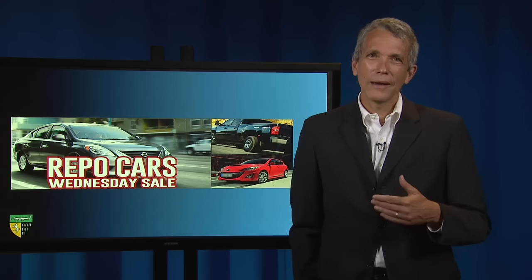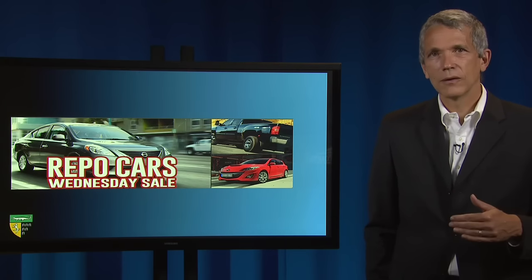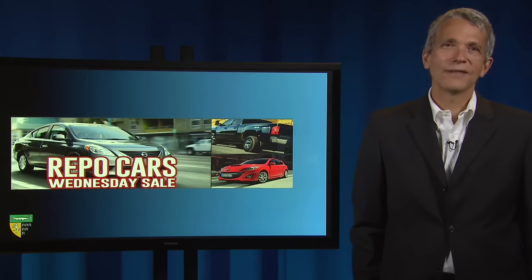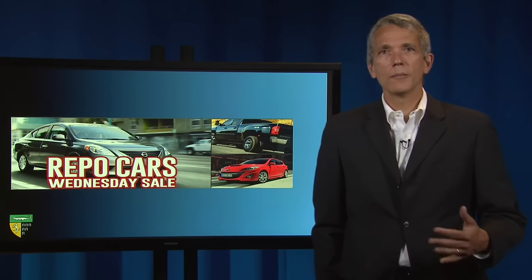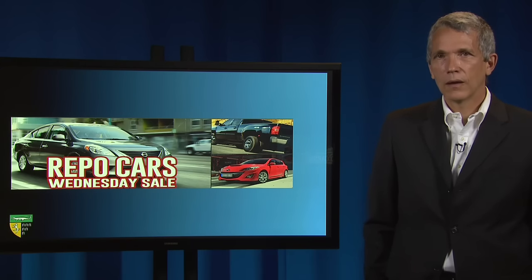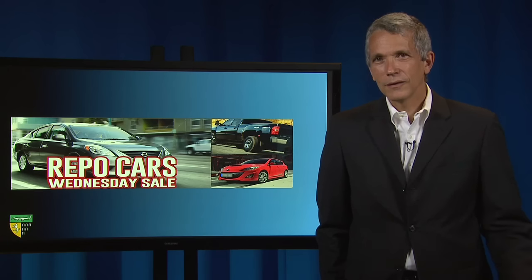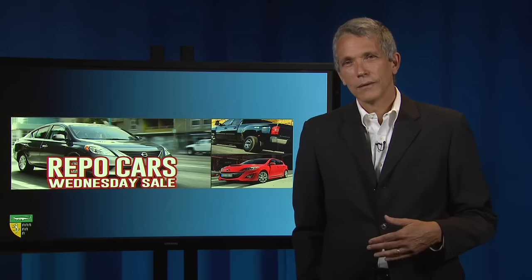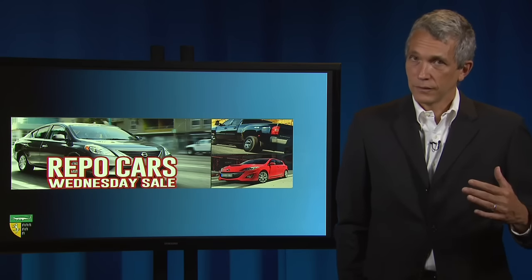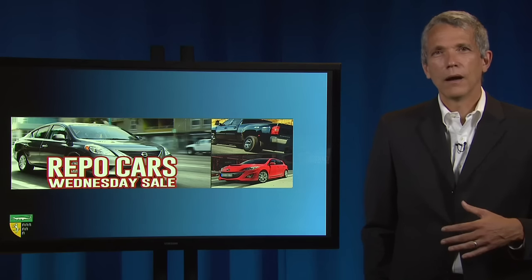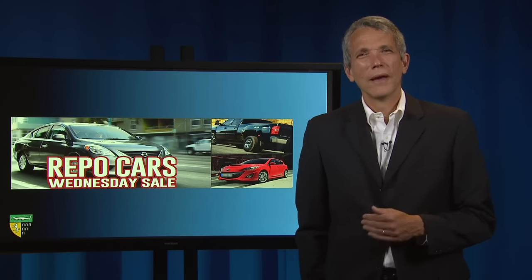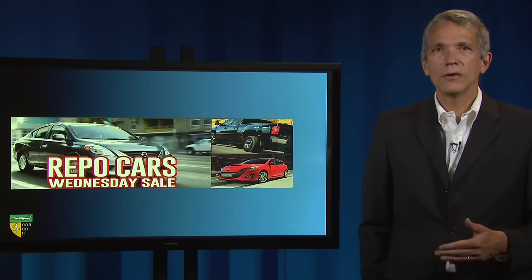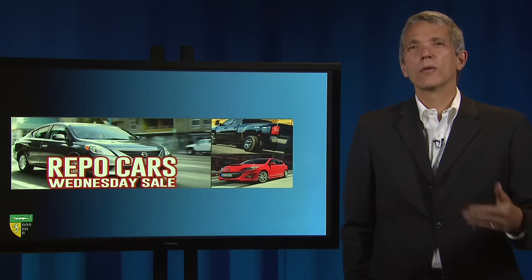Subject to a limited right of redemption by the borrower and the possible claims of other lien or secured creditors, the secured creditor will usually sell the repossessed property at a public or private sale. The proceeds of the sale will then be used to reimburse the secured creditor for expenses incurred in doing the repossession, to satisfy the underlying obligation, and to satisfy the security interest and those subordinate to the repossessing creditor. As with levying to satisfy a legal judgment, any surplus proceeds from the sale are paid to the debtor. If an inadequate sum is produced, the secured party is entitled to seek a deficiency judgment for the balance due, and in effect becomes an unsecured creditor with regard to that deficiency.